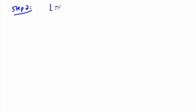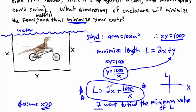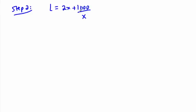Step two is to find where the derivative is zero. The equation for L was 2x + 1000/x. Before finding the derivative, I'll rewrite it in a more calculus-friendly form: 2x + 1000·x⁻¹, since x⁻¹ is the same as 1/x. Although it may look uglier, this avoids needing a product rule.